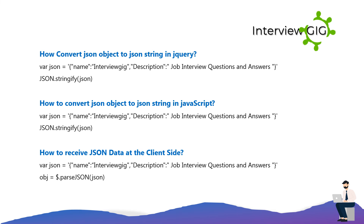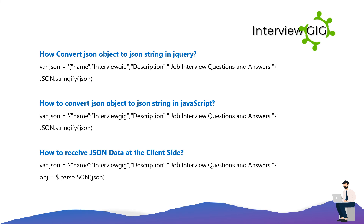How to convert a JSON object to a JSON string in jQuery: var json = '{"name":"InterviewGig","description":"Job Interview Questions and Answers"}'; JSON.stringify(json). How to convert a JSON object to a JSON string in JavaScript: var json = '{"name":"InterviewGig","description":"Job Interview Questions and Answers"}'; JSON.stringify(json).